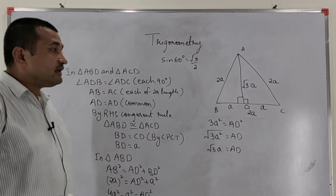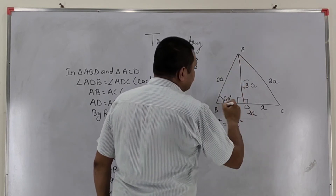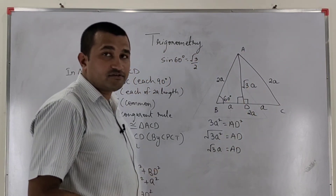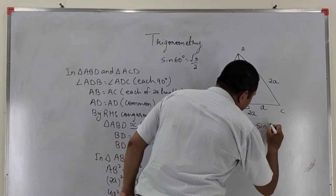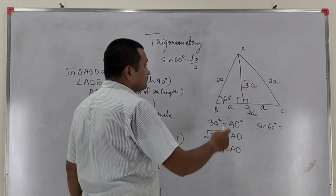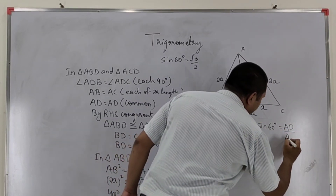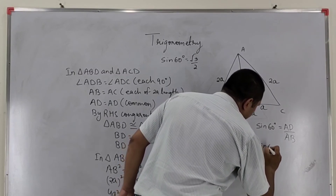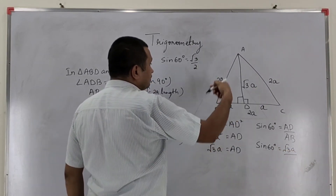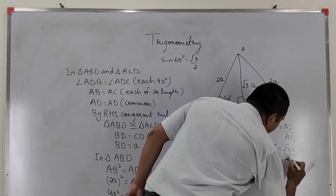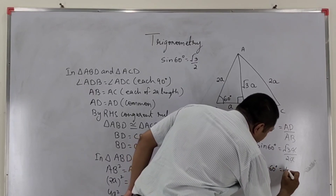Now I am going to find the sine 60 degree value. This angle B is equals to 60 degree because ABC is an equilateral triangle and in an equilateral triangle each angle measures 60 degree. Now as I have to find sine 60 degree, sine 60 degree equals perpendicular upon hypotenuse. Perpendicular here is AD and hypotenuse here is AB. So sine 60 degree equals root 3A upon 2A. Here A and A cancel, so sine 60 degree is equals to root 3 upon 2.